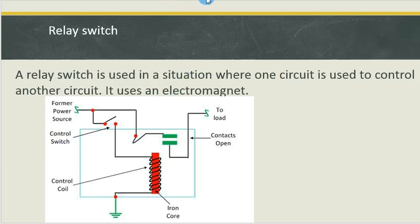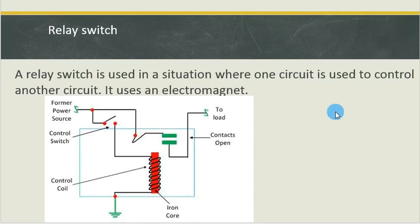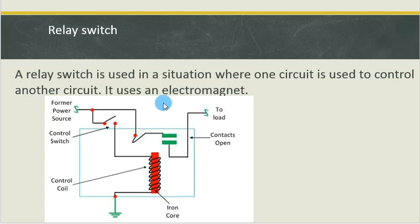The magnetic effect of an electric current can be used in a relay switch. A relay switch is used in a situation where one circuit is used to control another circuit. For example, if we want to switch on a very high voltage circuit but we are afraid of the effects of the high voltage, we can switch on that circuit by using another circuit with low voltage. As you can see, we have two circuits here — one part of the circuit with very high voltage. Here is the switch: if these two green contacts come into contact, then the circuit is complete and an electric current flows, completing the other circuit which may be of very high voltage.